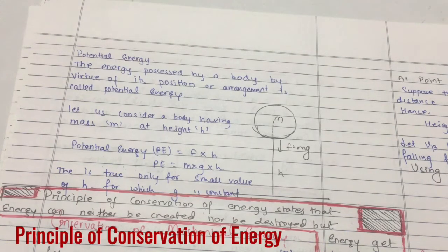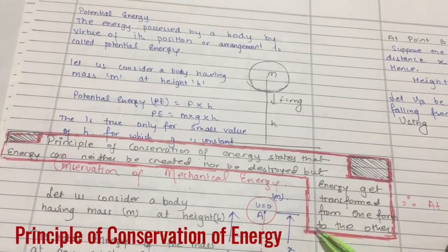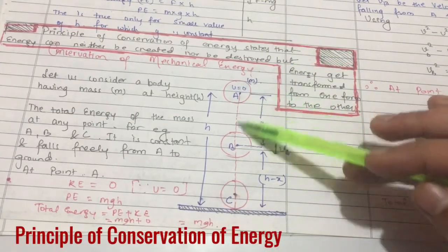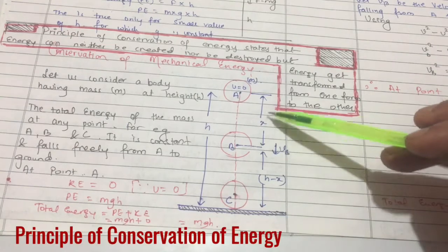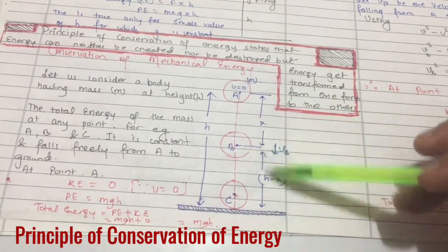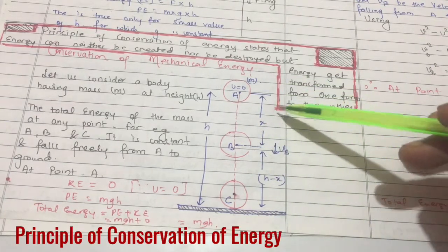Let us prove how conservation of mechanical energy takes place. Here we have a body at certain height h. Let us say that the body moves from point A to point B and then point B to point C. At any instant if I say B as one instant, then the height is x and this will be h minus x as another height. The body is falling with velocity vB.